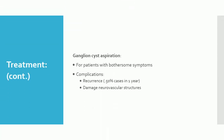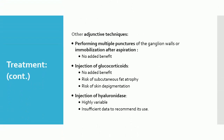Ganglion Cyst Aspiration: For patients with bothersome symptoms, aspiration of the ganglion cyst is suggested. However, the patient should be informed that more than half of ganglion cysts treated with aspiration will recur within approximately one year. In the case of volar cysts, caution is needed in order not to damage neurovascular structures, particularly the radial artery and the palmar cutaneous branch of the median nerve. Adjunctive techniques such as performing multiple punctures of the ganglion walls or immobilization after aspiration have not shown added benefit.